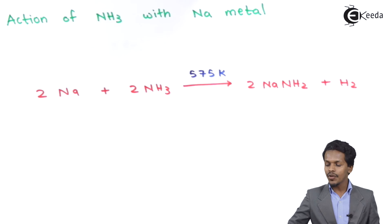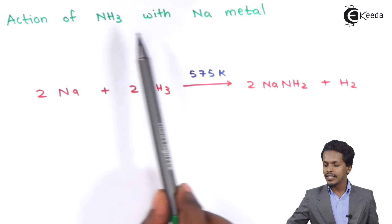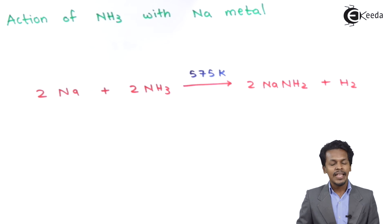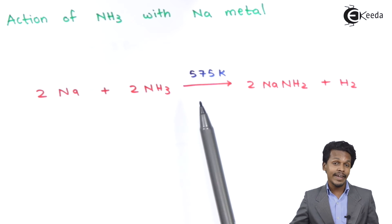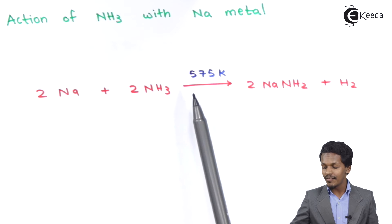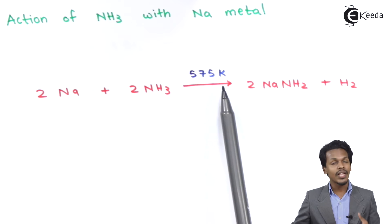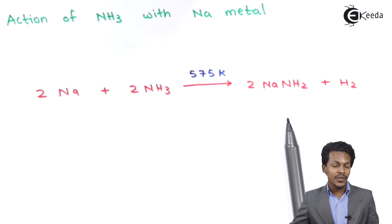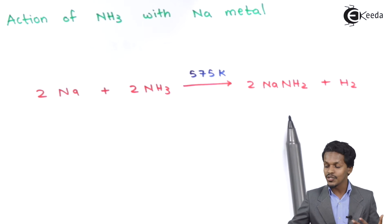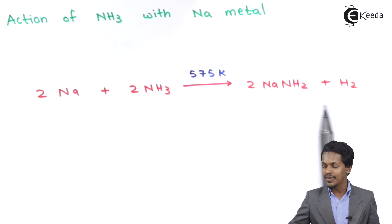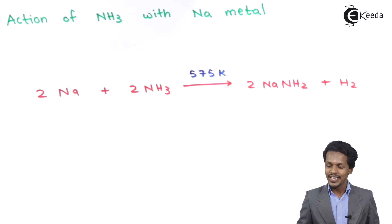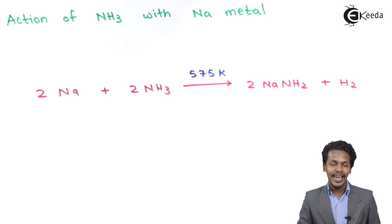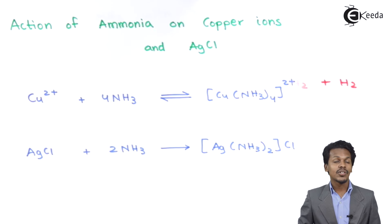The next reaction is the action of ammonia with sodium metal. When sodium metal is reacted with ammonia at a temperature of 575 Kelvin, the product obtained is sodamide, NaNH₂, along with the liberation of H₂ gas.